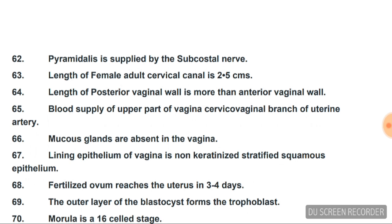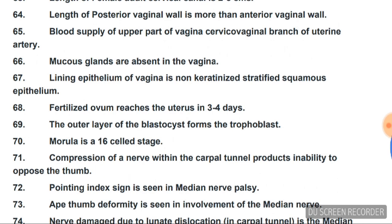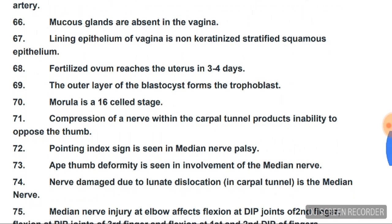Length of the female adult cervical canal is 2.5 cm. Length of the posterior vaginal wall is more than the anterior. Blood supply of the upper part of vagina is from the cervicovaginal branch of the uterine artery. Mucous glands are absent in the vagina. Lining epithelium of the vagina is non-keratinized stratified squamous epithelium.